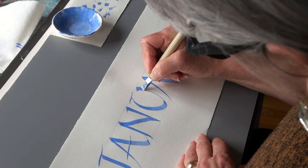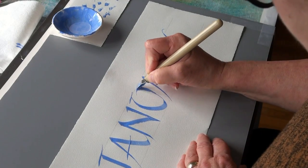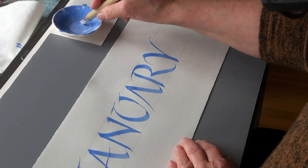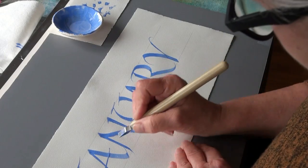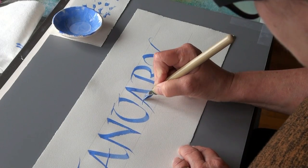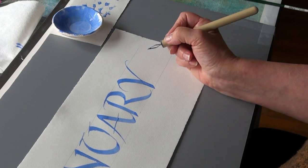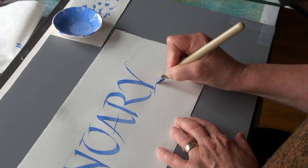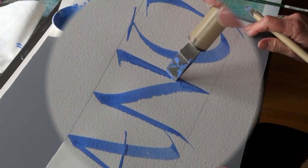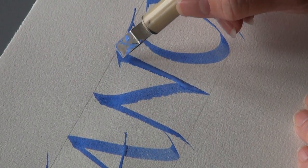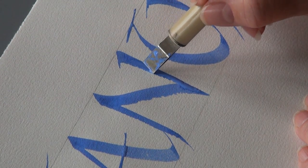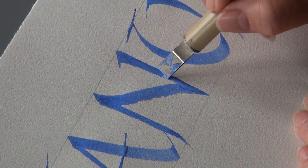For better or for worse, I thicken up the bowl of the U and add the serif. As I reload, I come back to measure the placement of the first cross bar of the A to do the second cross bar of the second A. Still unhappy with the N, I come back to touch it up.